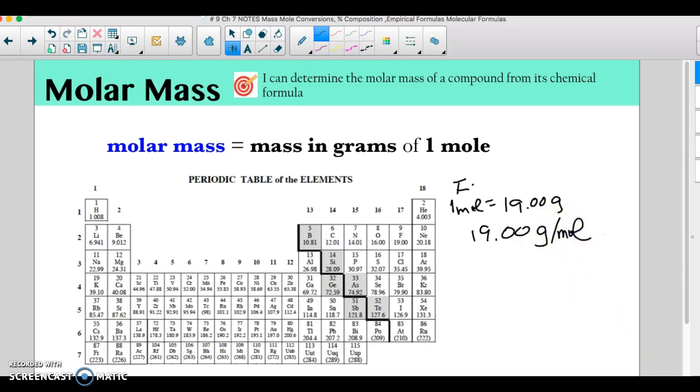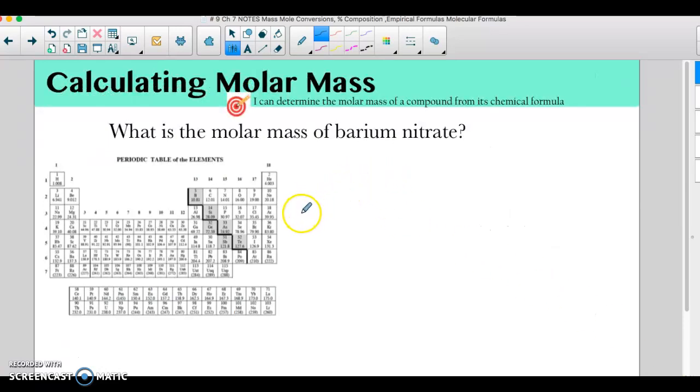So now we're going to put this to compounds. So here is an example: barium nitrate. What we would do is first thing is we would write the chemical formula for barium nitrate.